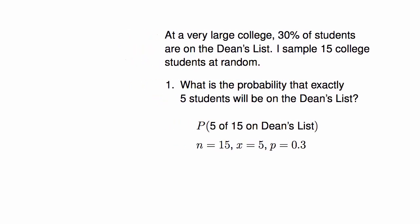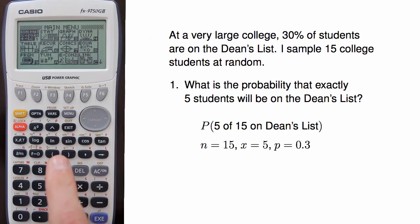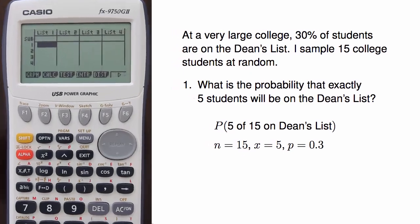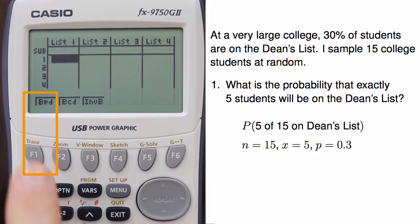I can compute the result on the Casio calculator by first going to the stats section using menu and then hitting 2. Then I can hit F5 for distributions, F5 again for binomial distribution, and F1 for binomial probability distribution.